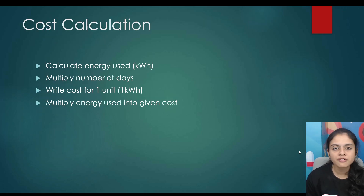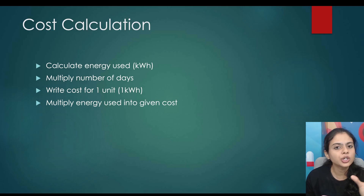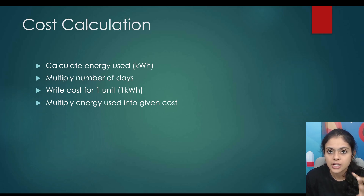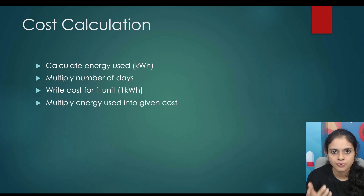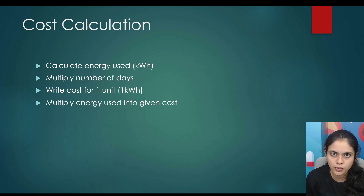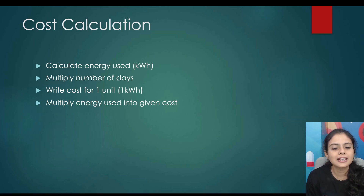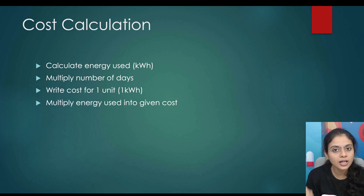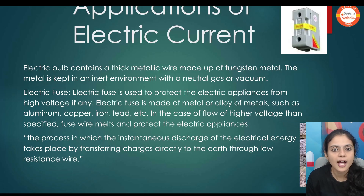You'll get a question on cost calculation. Calculate the energy used in kilowatt-hours — they'll say for 10 days, 20 days, for 15 hours. Just multiply the things and you'll get the energy consumed. Multiply the energy consumed per day by the number of days given. Then write the cost of one unit, which will be given in the question. Multiply energy by cost per unit — finally, you'll get the total cost of energy consumed.